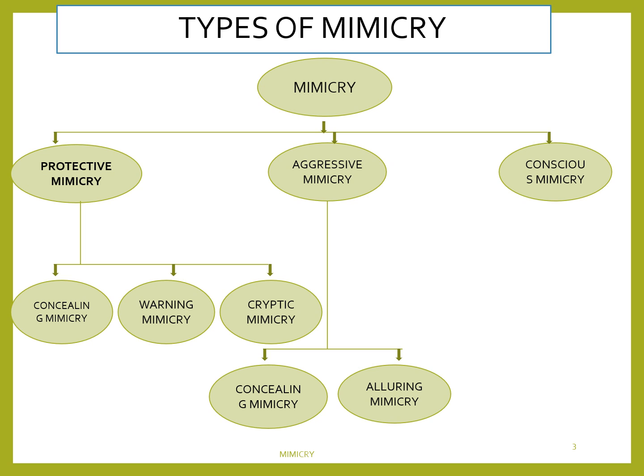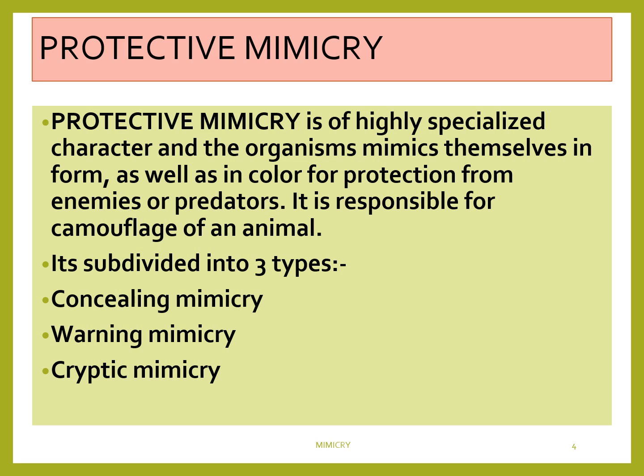There are three types of mimicry: protective mimicry, aggressive mimicry, and conscious mimicry. Protective mimicry is again of three types: concealing mimicry, warning mimicry, and cryptic mimicry. Aggressive mimicry is of two types: concealing mimicry and alluring mimicry. Protective mimicry is of highly specialized character and the organism mimics itself in form as well as color for protection from enemies or the predator. It is responsible for camouflage of the organism.